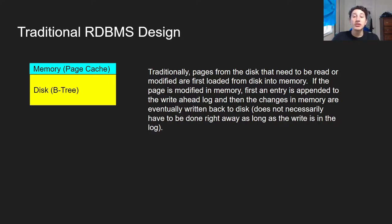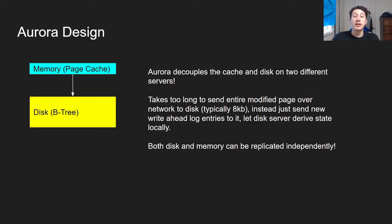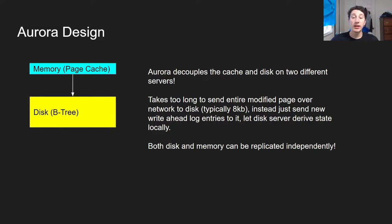The key change Aurora makes is that it actually decouples the memory and the disk into two different servers. We have a server acting solely as the page cache, and another acting as the actual storage. The problem is it generally takes too long to send an entire modified page — typically about eight kilobytes — from the page cache over the network to disk on every write. So what Aurora has decided to do instead is just send the corresponding write-ahead log entry. That WAL entry goes to disk, things are now persistent, and the disk can in the background make those updates locally. As long as things are in the write-ahead log, a write is considered persistent.